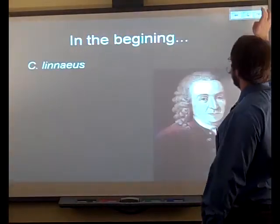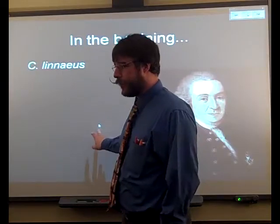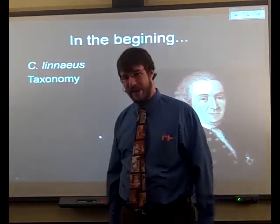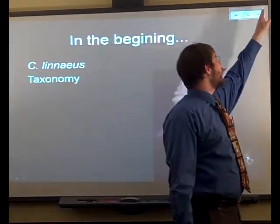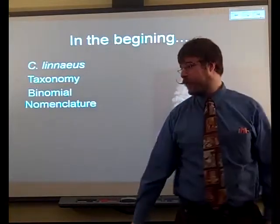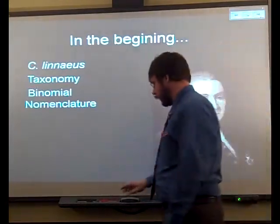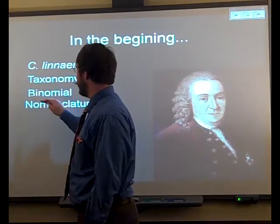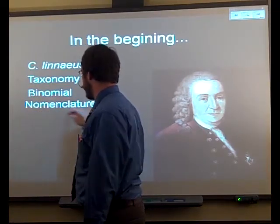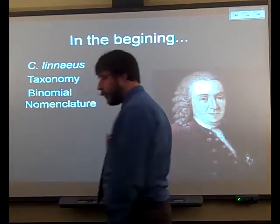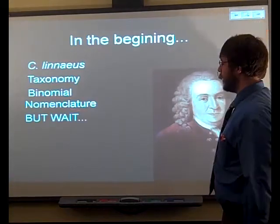We're going to talk about classification today. It is a very complicated system. For the most part, it's this guy Carl Linnaeus who came up with this whole thing called taxonomy. And in taxonomy, he invented this thing called binomial nomenclature. That's really easy because bi means two, nomial means name, nomenclature means naming system. So it's a two-name naming system.